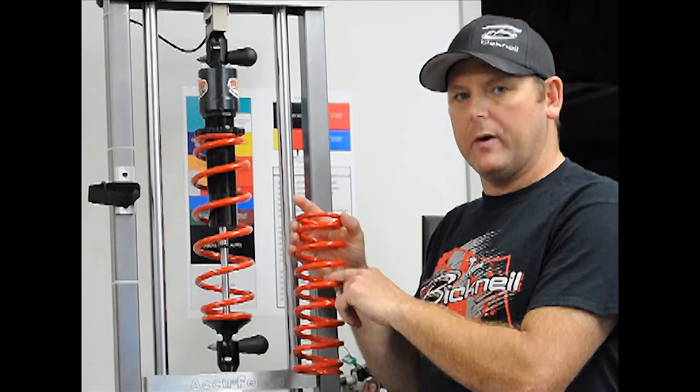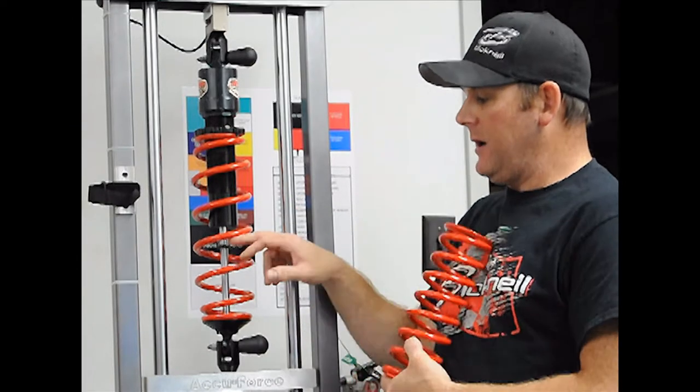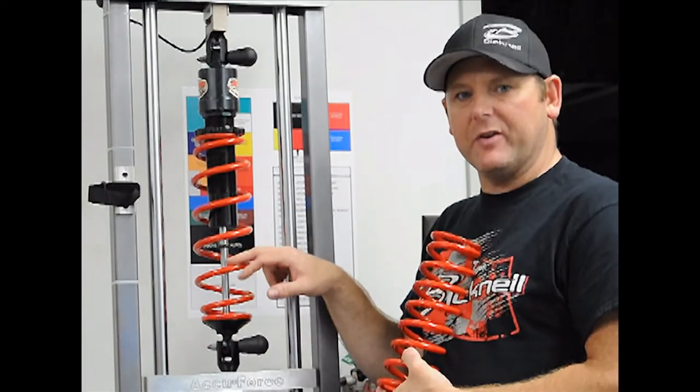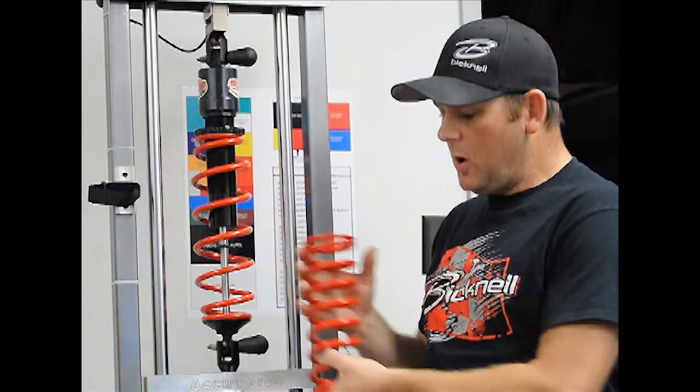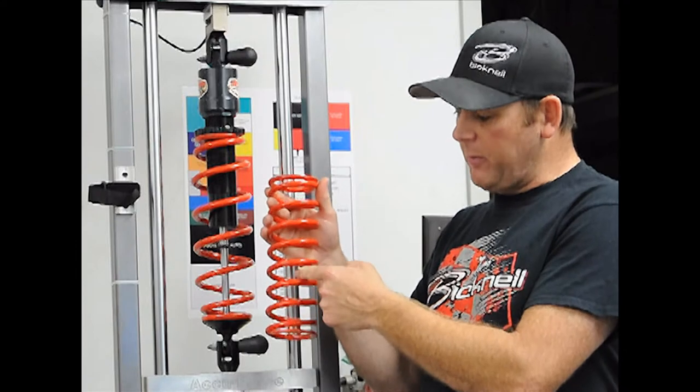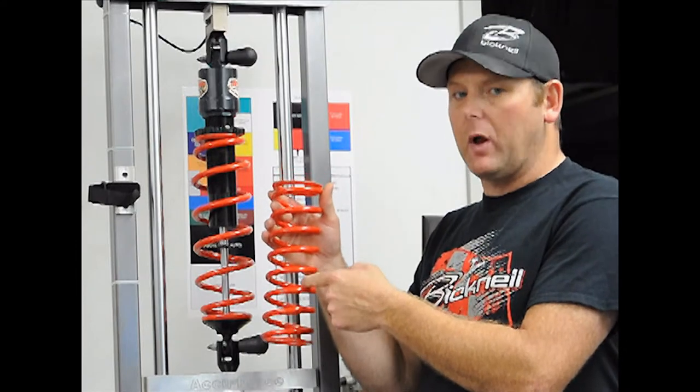This spring doesn't have a ton of—or it's going to have a big gap between it—so it's not going to pick up a spring rubber very fast. Whereas this spring picks up a spring rubber very quick because the coils are a lot closer together.